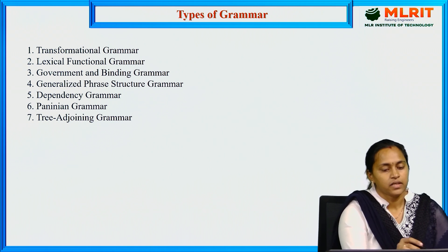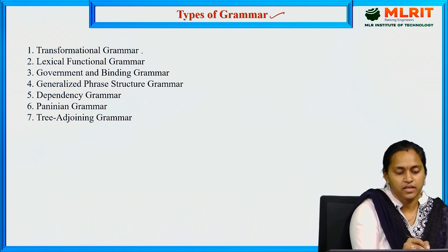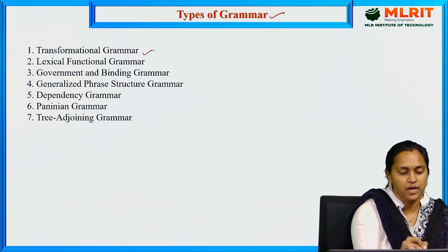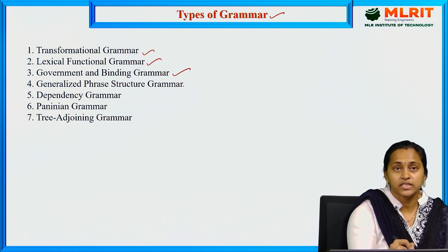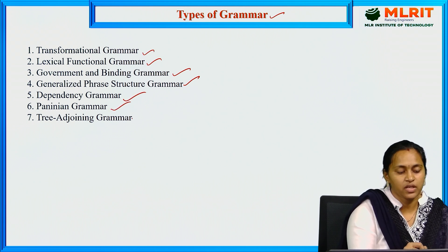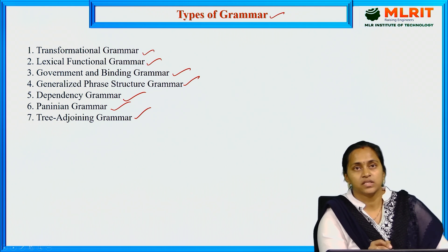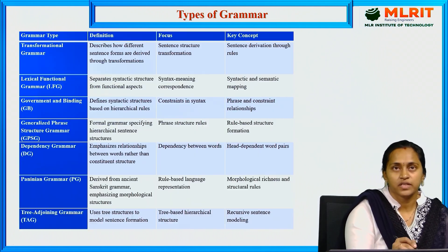Types of grammar: transformation grammar, lexical functional grammar, government and binding grammar, generalized phrase structure grammar, dependency grammar, Paninian language model, and tree-adjoining grammar.